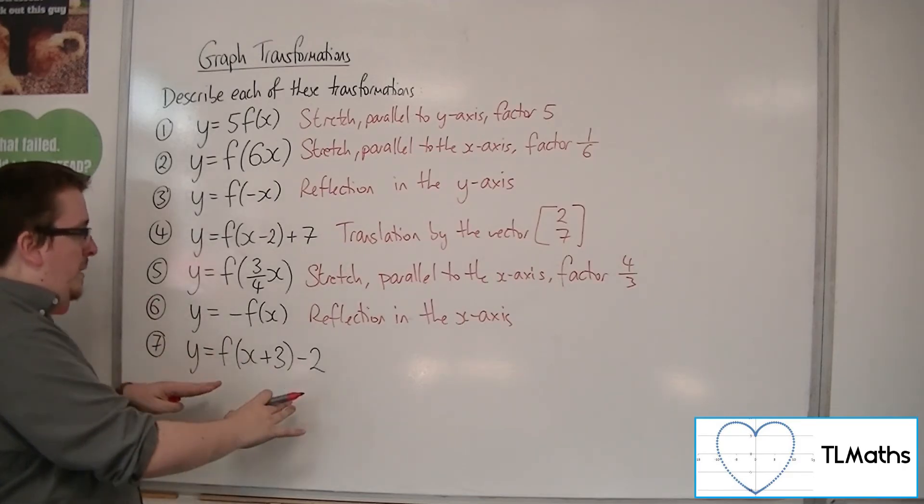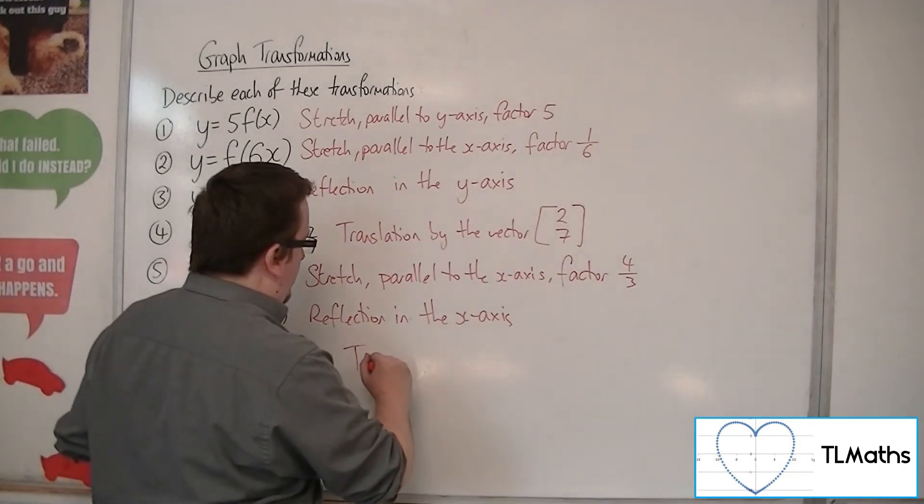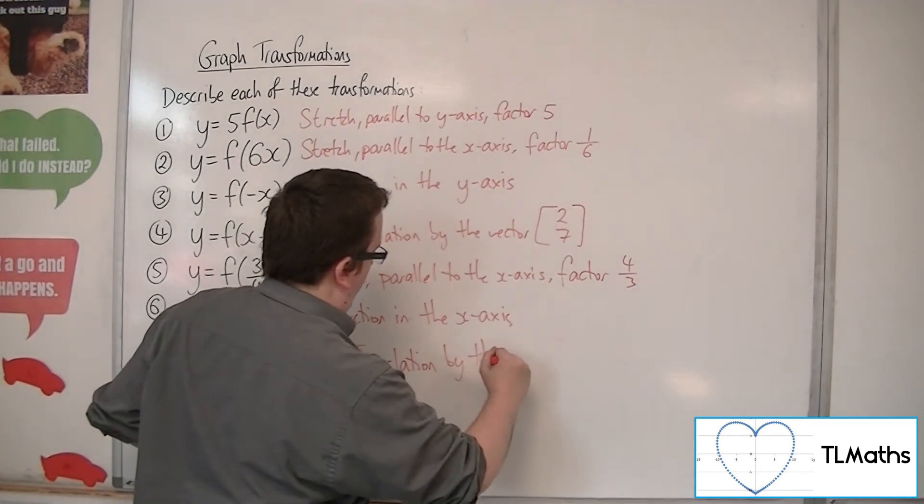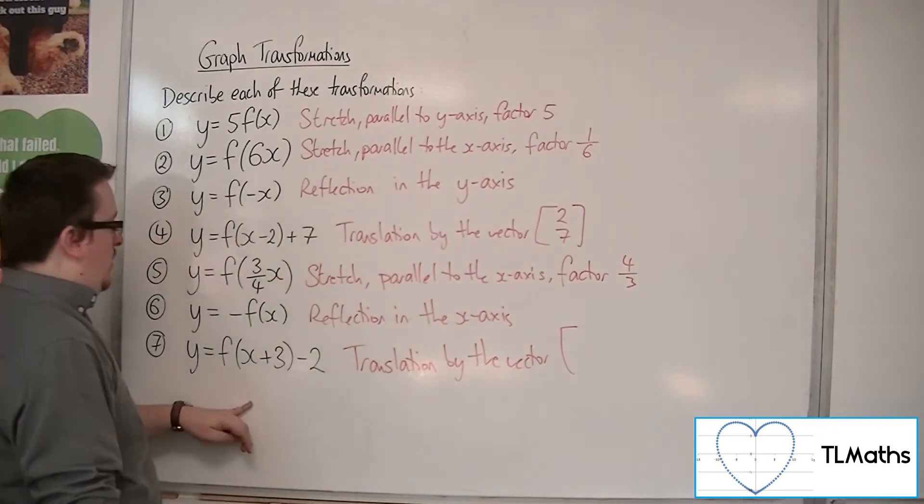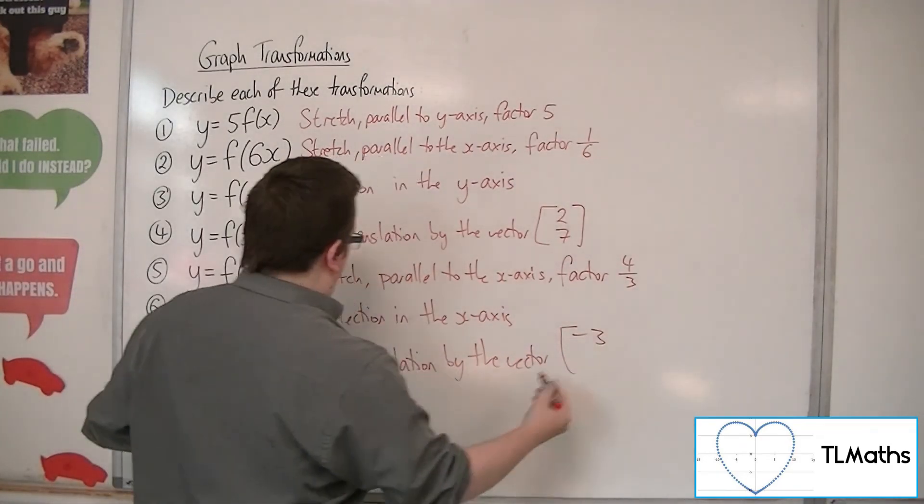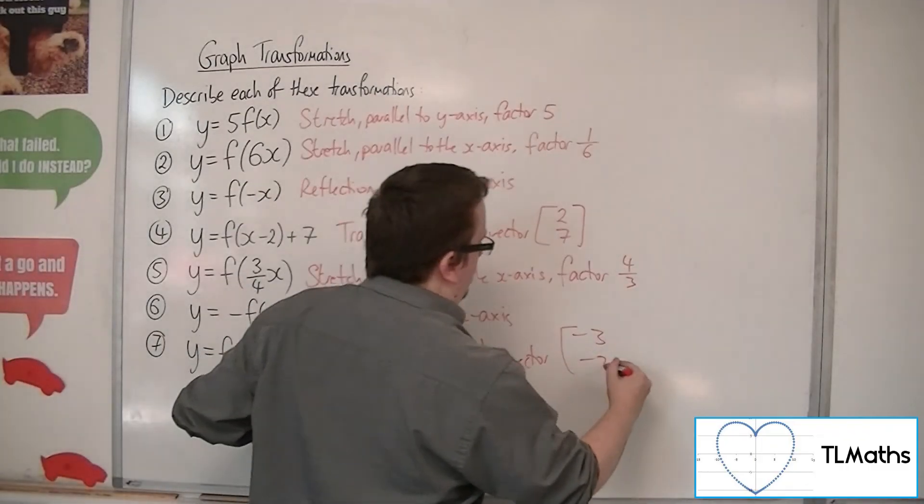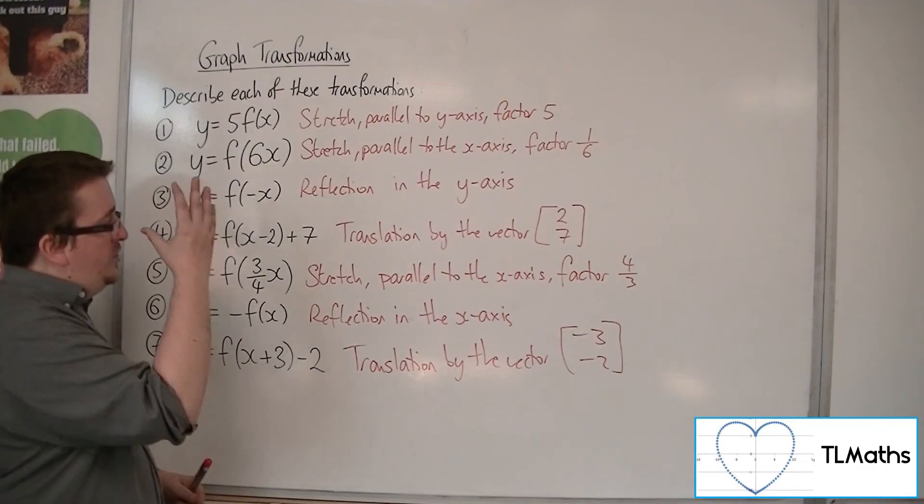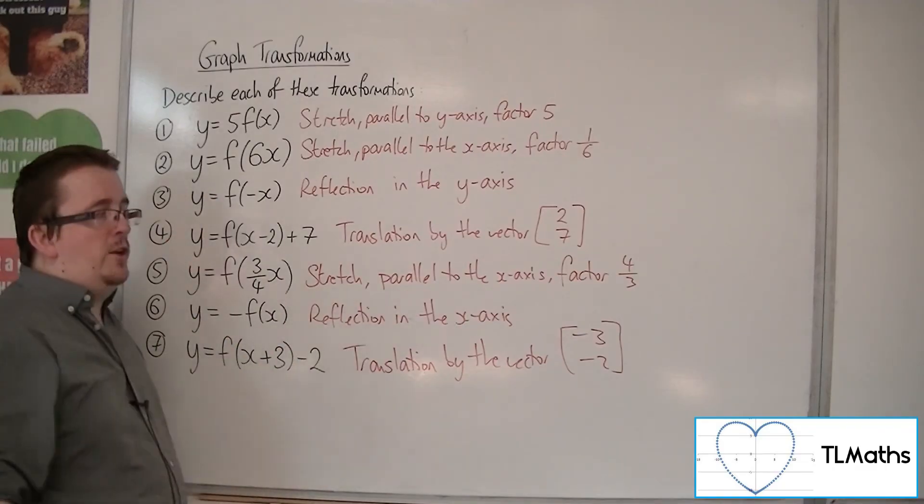The last one, number seven, is another translation. The number inside the bracket changes sign, the one outside stays the same, so minus 3, minus 2. And that is how we can describe these transformations.